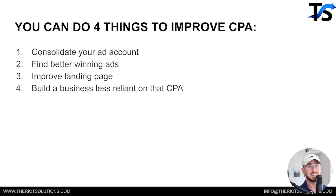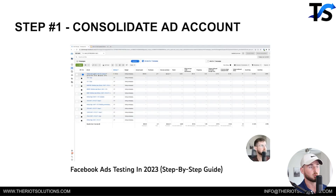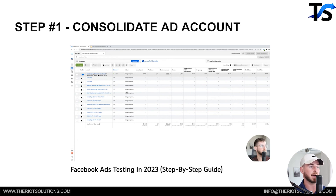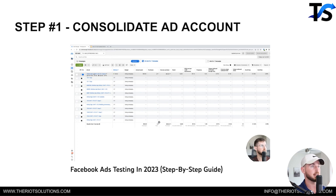Going into step number one — consolidation of the ad account. This is where we're going to go from maybe four or five campaigns down to one or two campaigns, depending on your particular scenario. Go watch the video 'Facebook ads testing in 2023' — that will show you how to consolidate your ad accounts and run that one campaign setup. This is one of the main things we do in the beginning of decreasing that CPA.